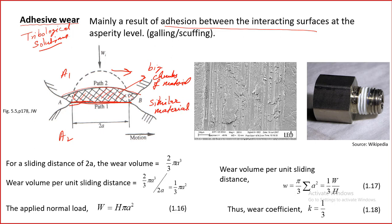For metals, adhesive wear commonly occurs between ferrous and ferrous pairs. Therefore it is important that one of the pair must be a different material. In industry, people don't say a component is failing by adhesive wear — the mode of failure is called galling or scuffing.